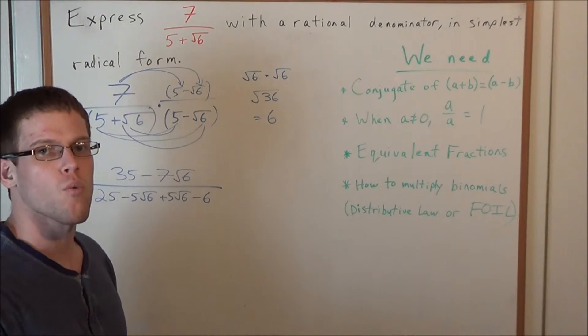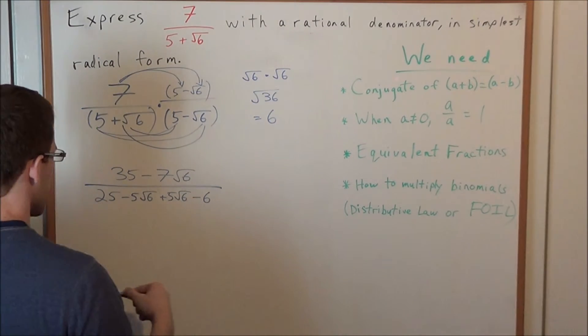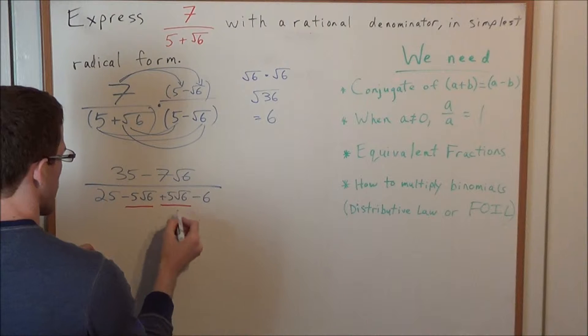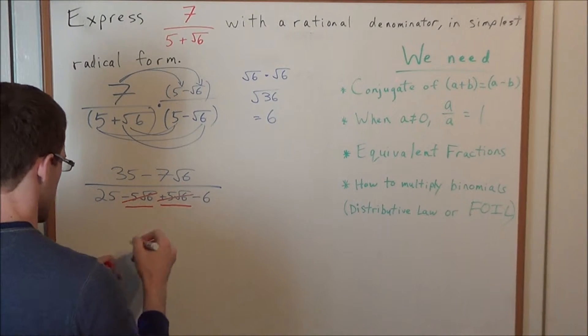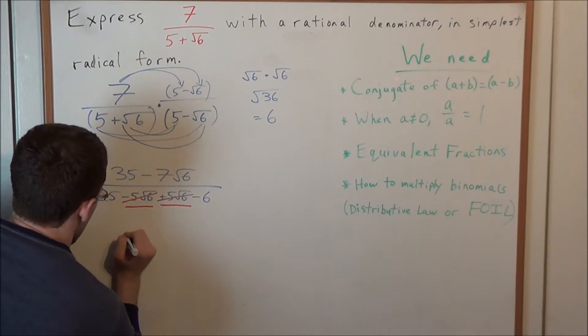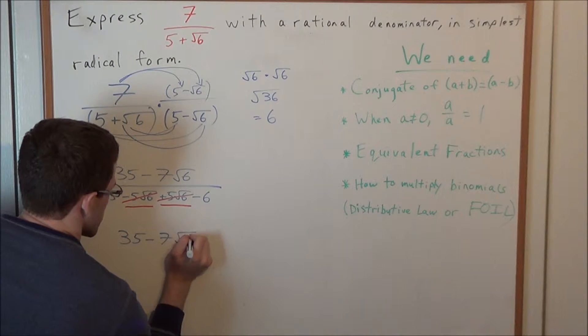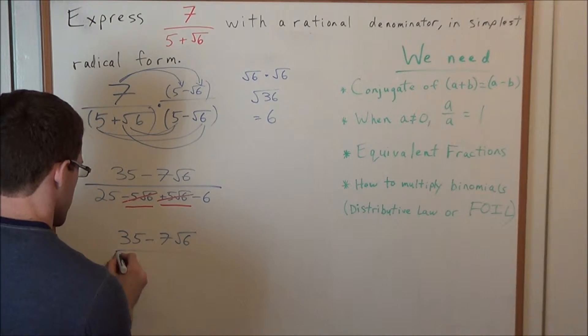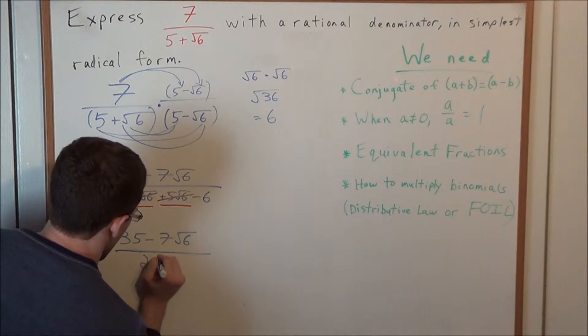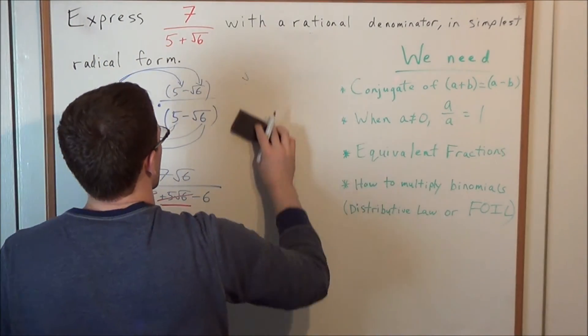Now we need to look for what terms are going to simplify and cancel out. Well, in the denominator here, we have a minus 5 radical 6 and a plus 5 radical 6. So those two terms are going to cancel, which will allow us to write the next line. We have 35 minus 7 radical 6 divided by... and now all we have left is 25 minus 6, which now brings us to our last step.